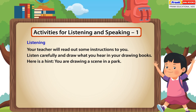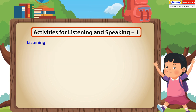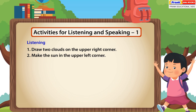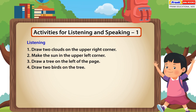Here is a hint: you are drawing a scene in a park. Draw two clouds on the upper right corner. Make the sun in the upper left corner. Draw a tree on the left of the page. Draw two birds on the tree.